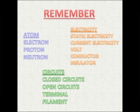Remember all of these important terms, especially as we start our unit on electricity. We have atom, including electron, proton, and neutron. Electricity, including static electricity and current electricity. Volt, conductor, and insulator. And circuit, including open circuit, closed circuit, dry cell, filament, and terminal.